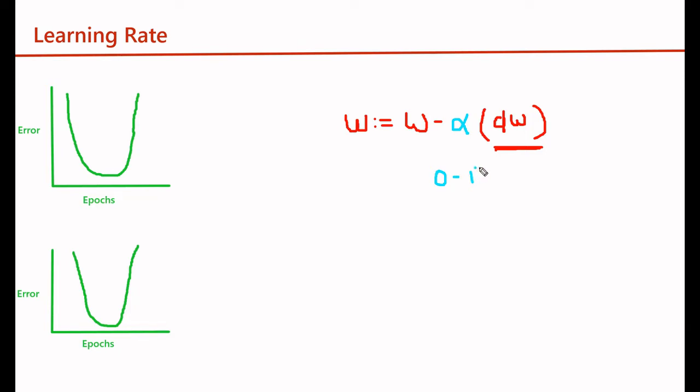1 indicates we are going to take the whole value of the derivative, and 0 indicates we don't want to update the weights.